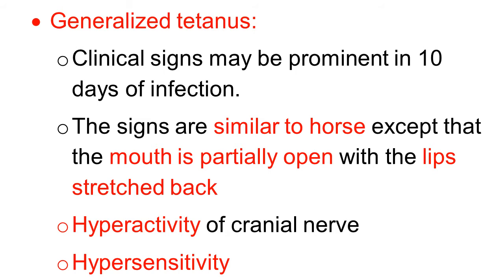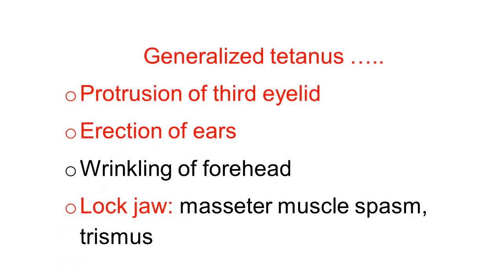There is hyperactivity of the cranial nerves, because the neurotoxin has reached the central nervous system. There is hypersensitivity. Generalized tetanus symptoms in dog and cat include protrusion of the third eyelid. This is observed in almost all animals.